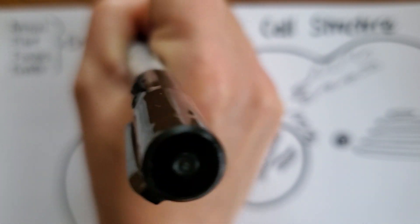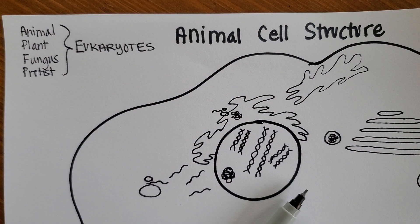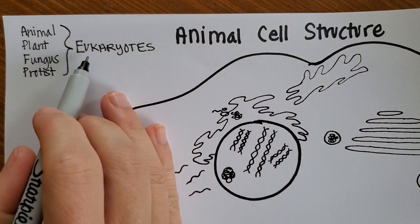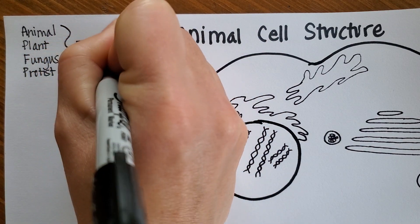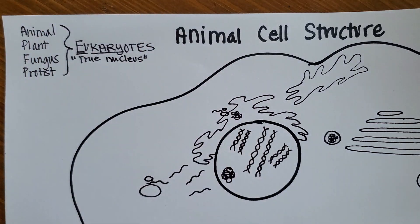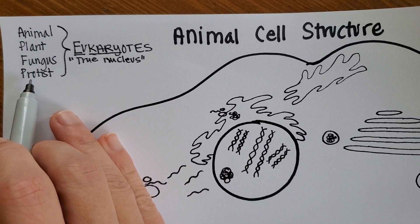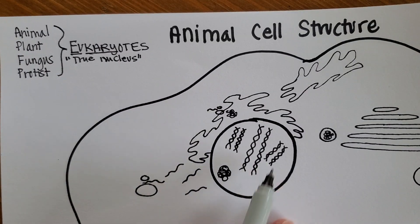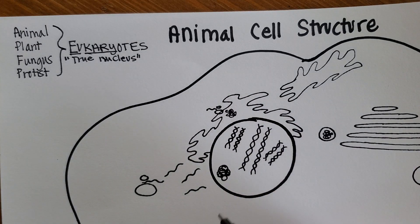The word eukaryote is Greek for 'true nucleus.' Karyo means nucleus and eu means true. So all of these living things will have a nucleus, which we'll talk about right here — it's where the DNA is, and it has a membrane around it. And it will have a bunch of other important organelles that we'll talk about, like endoplasmic reticulum, Golgi apparatus, mitochondria, etc.